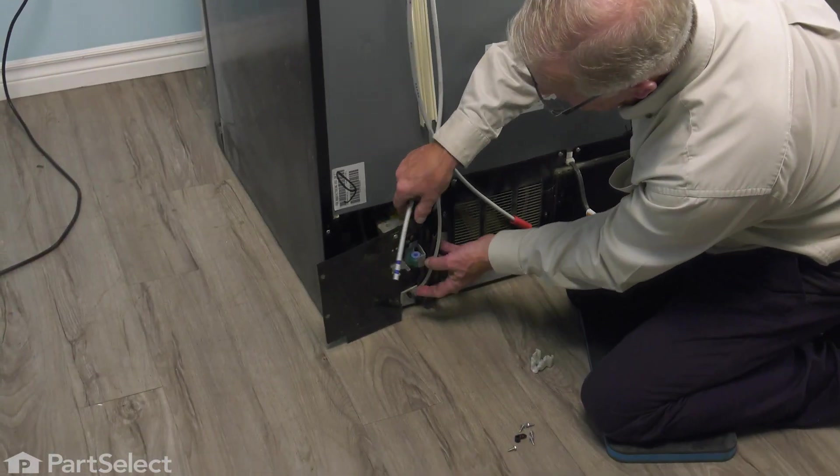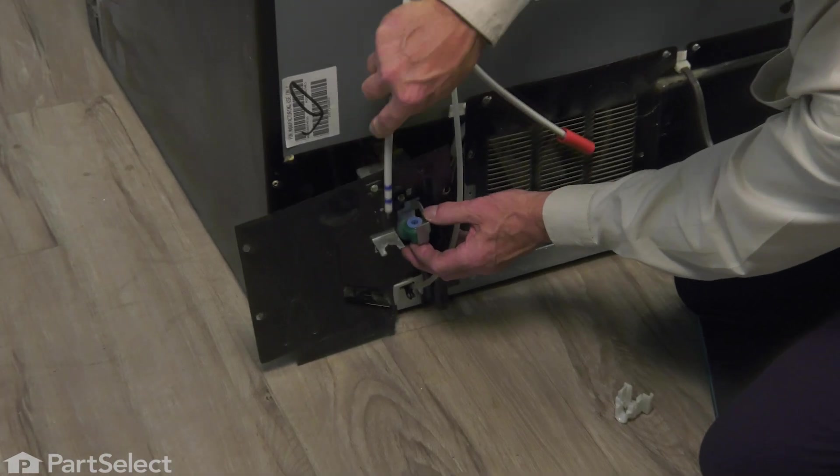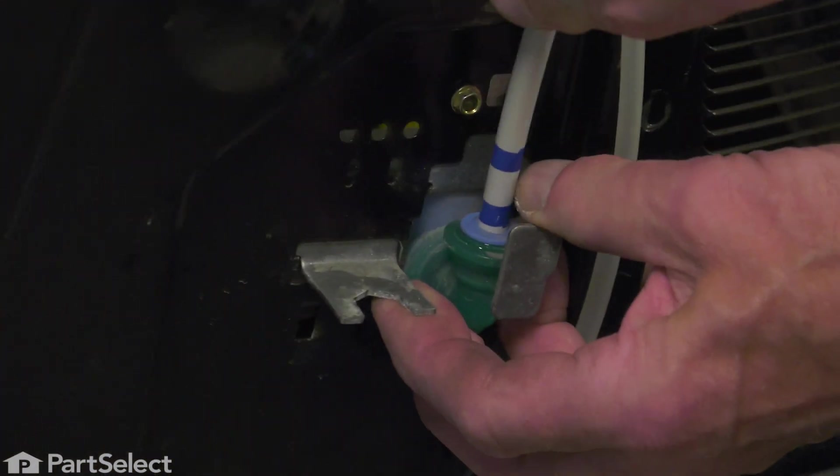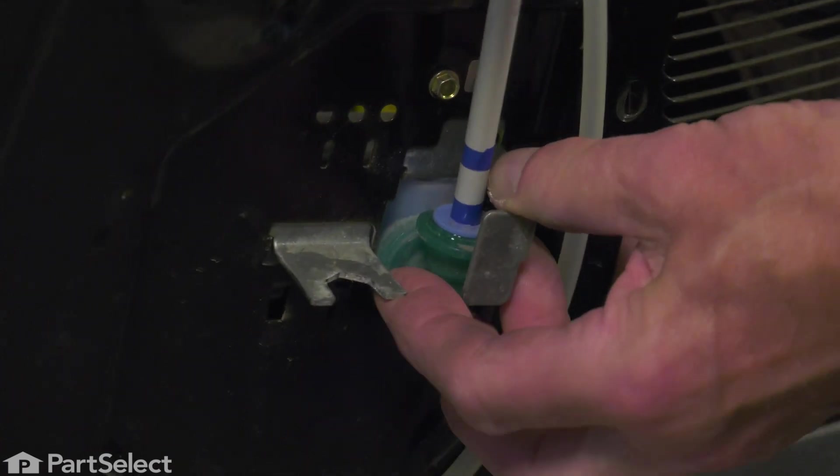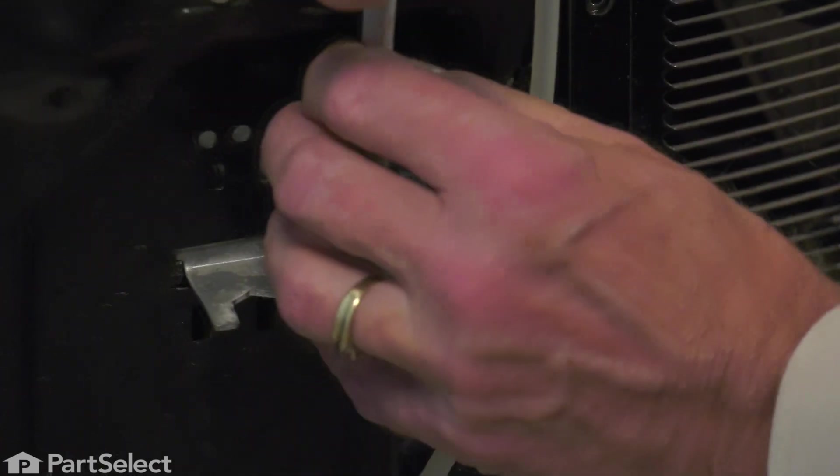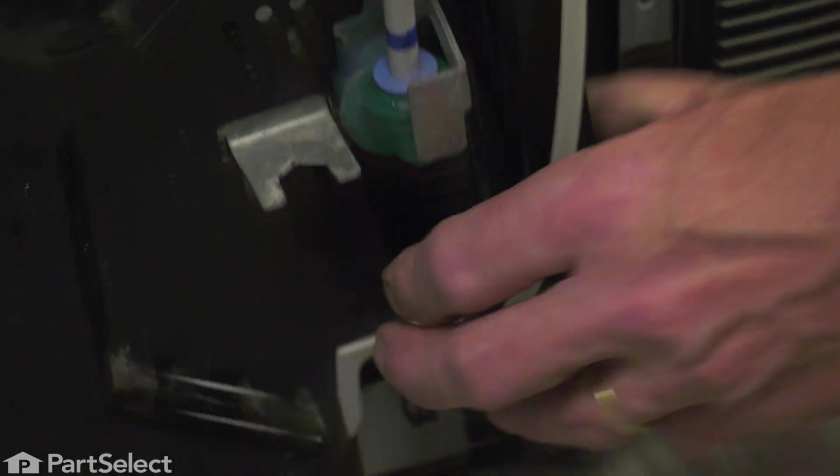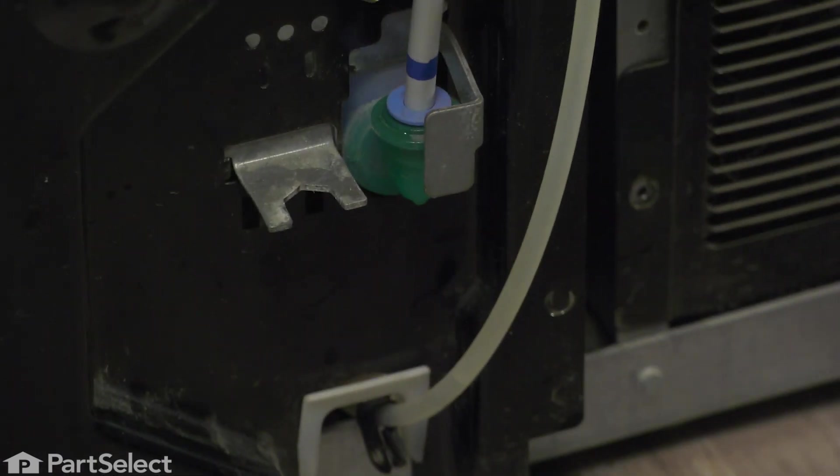We'll reconnect that return line into the valve. Simply line it up with that collar and press it firmly down into place. Just pull back on it to ensure that it's properly engaged.